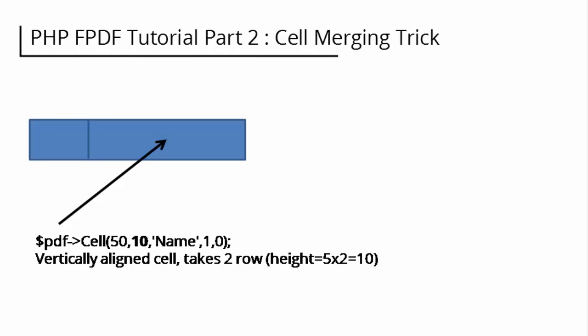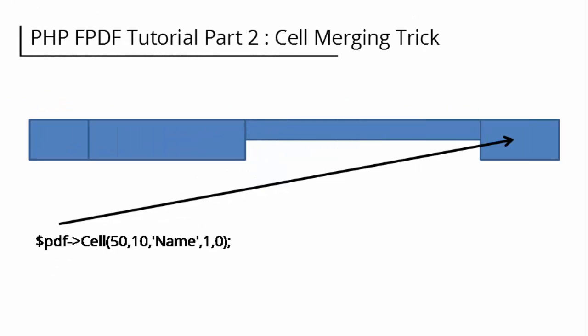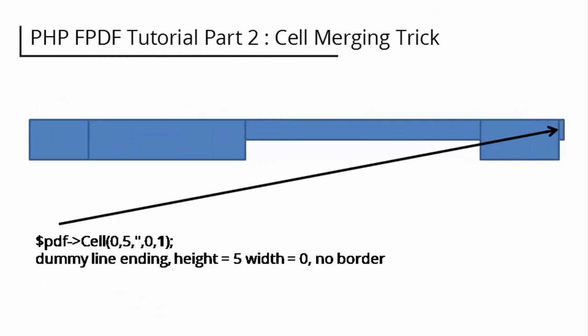The second cell is the same as the first but with a different width. The third cell is one row with a width of 100, because it is a horizontally merged cell which occupies four columns with a width of 25 each. The next cell is a two-row, one-column merged cell — and here is the trick.